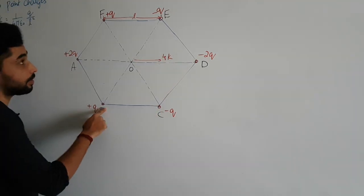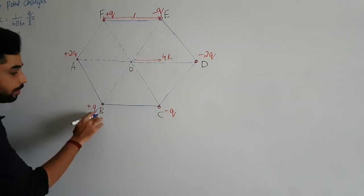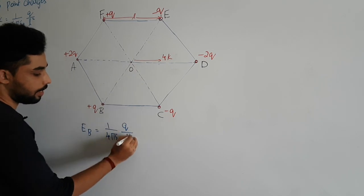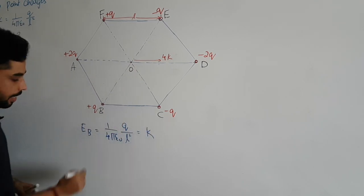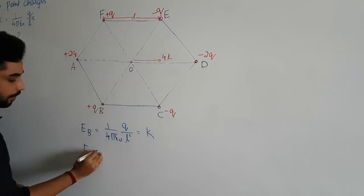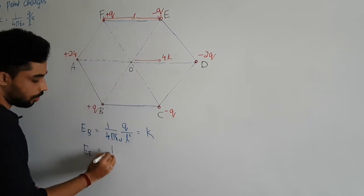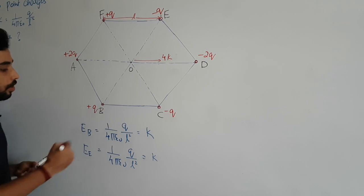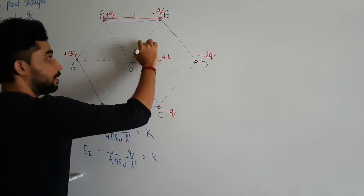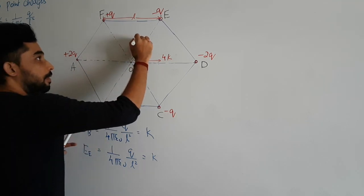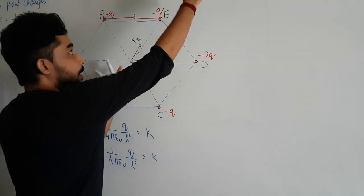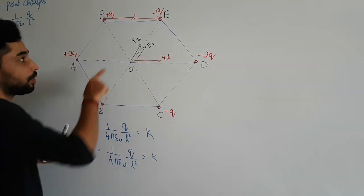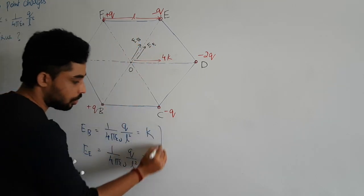Similarly, for the charge plus q at B: EB equals 1 by 4 pi epsilon naught times q divided by L squared, which equals k. For the charge minus q at E: EE also equals k. Due to the positive charge at B, the field at O points outward from B, and due to the negative charge at E, the field at O points inward toward E — both are in the same direction. So EB plus EE equals 2k.